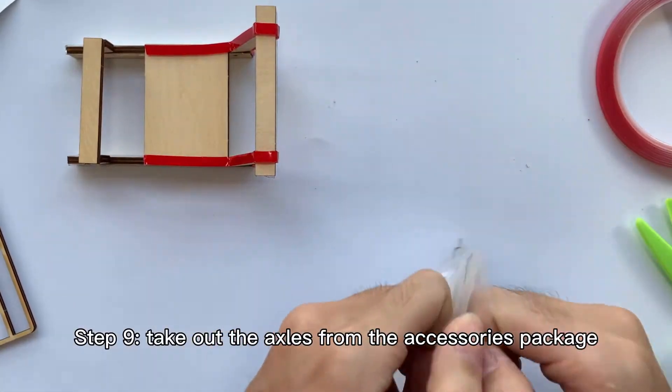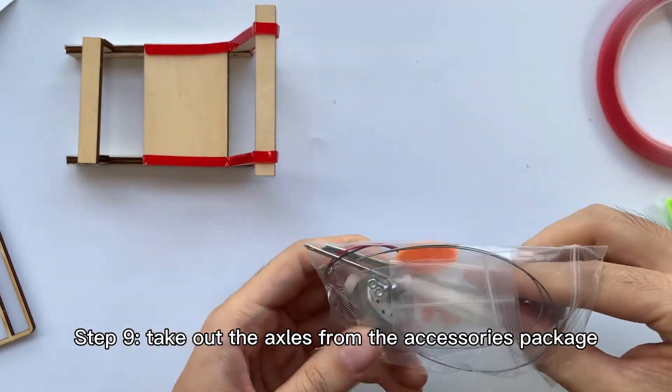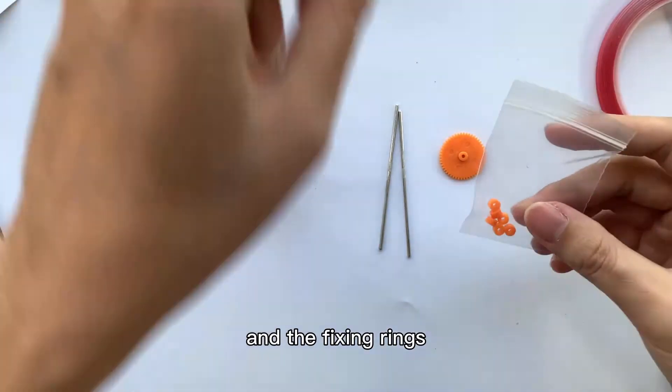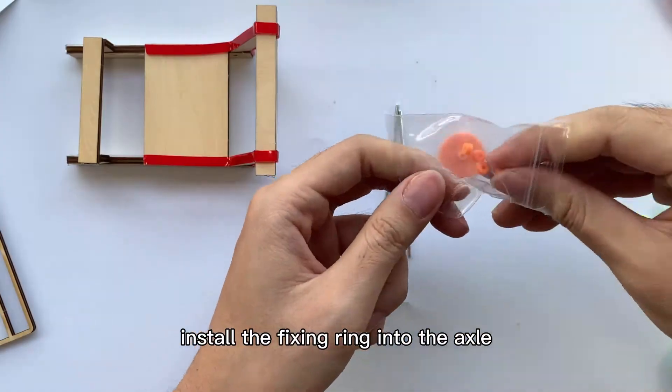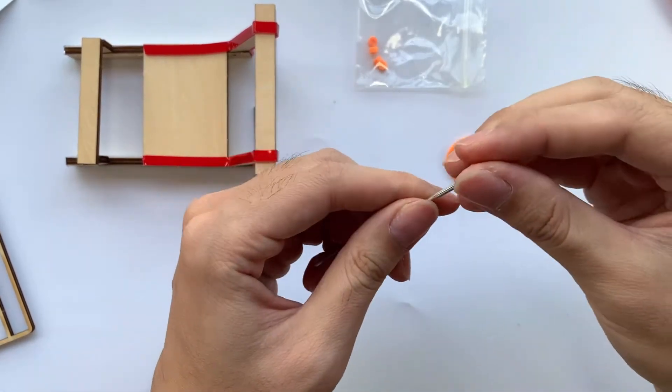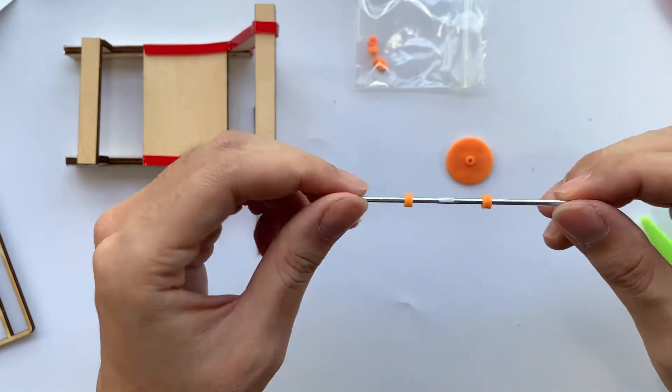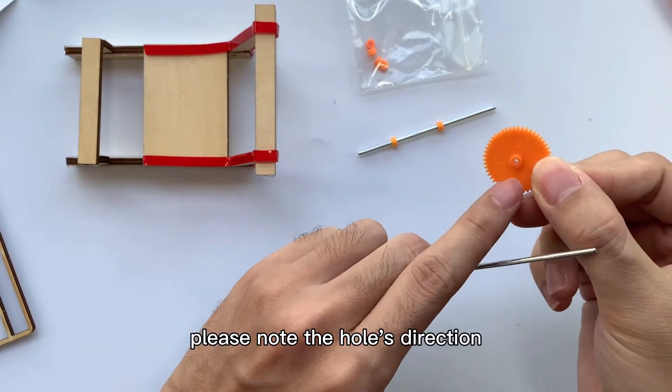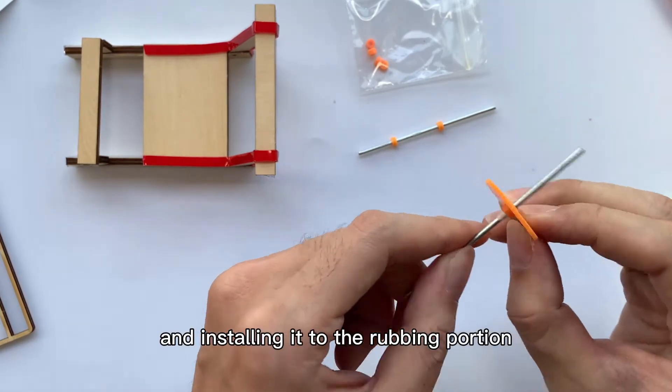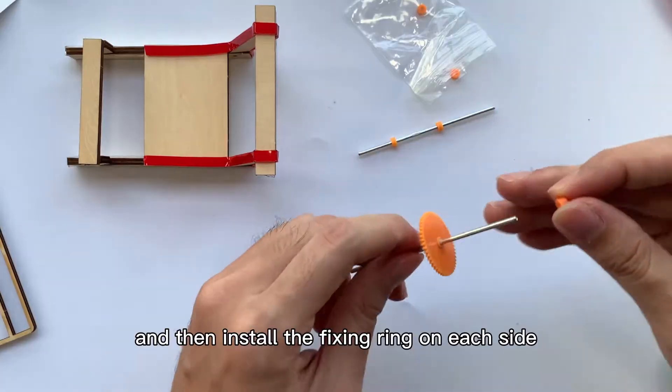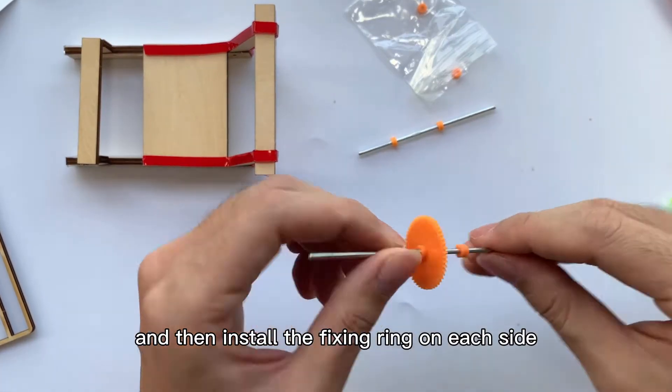Step 9: Take out the axles from the accessories package, and the axle gear and the fixing rings. Install the fixing ring into the axle, one for each side. Then install the axle gear into the next axle. Please note the hole's direction and install it to the rubbing portion. And then install the fixing ring on each side.